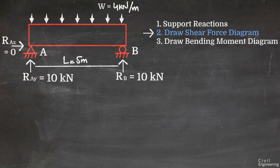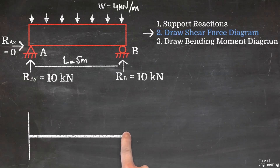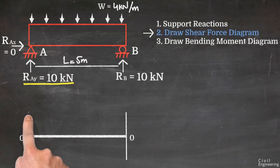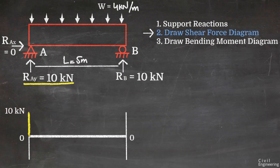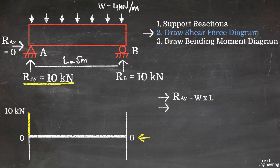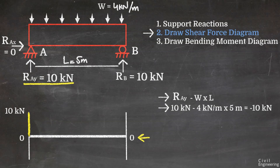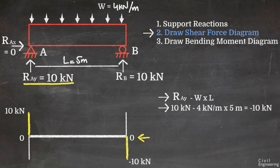The next task is to draw the shear force diagram. We draw the reference line at zero. At the left end, the reaction of 10 kN acts upward, so we draw a line of +10 kN. At point B, the shear force equals RAY minus W×L = 10 − (4×5) = −10 kN. We draw −10 kN at point B and join the two lines to complete the shear force diagram.